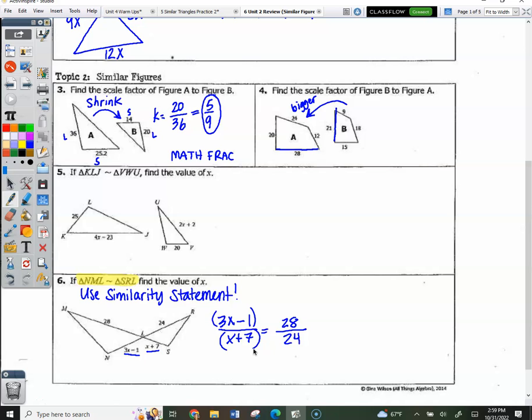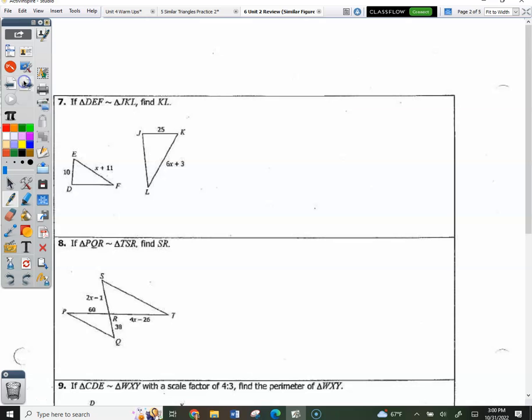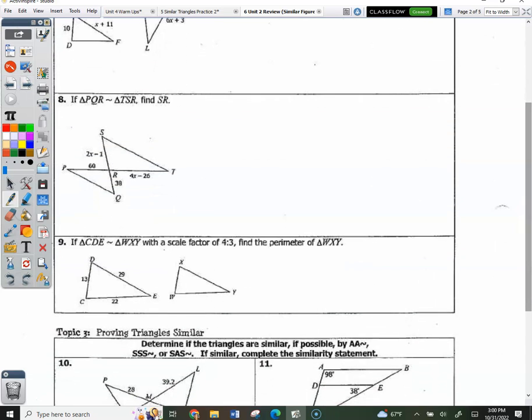Take a highlighter. Please. Highlight number 6, number 8, and 9. Now, 6 and 8, watch your similarity statement. Make sure you're comparing the correct things. Just like I did right here in the 6. Go to 9. 9 says, if these two triangles are similar with a scale factor of 4 colon 3. Look at this. This is read 4 to 3. That's how it's read. 4 to 3.